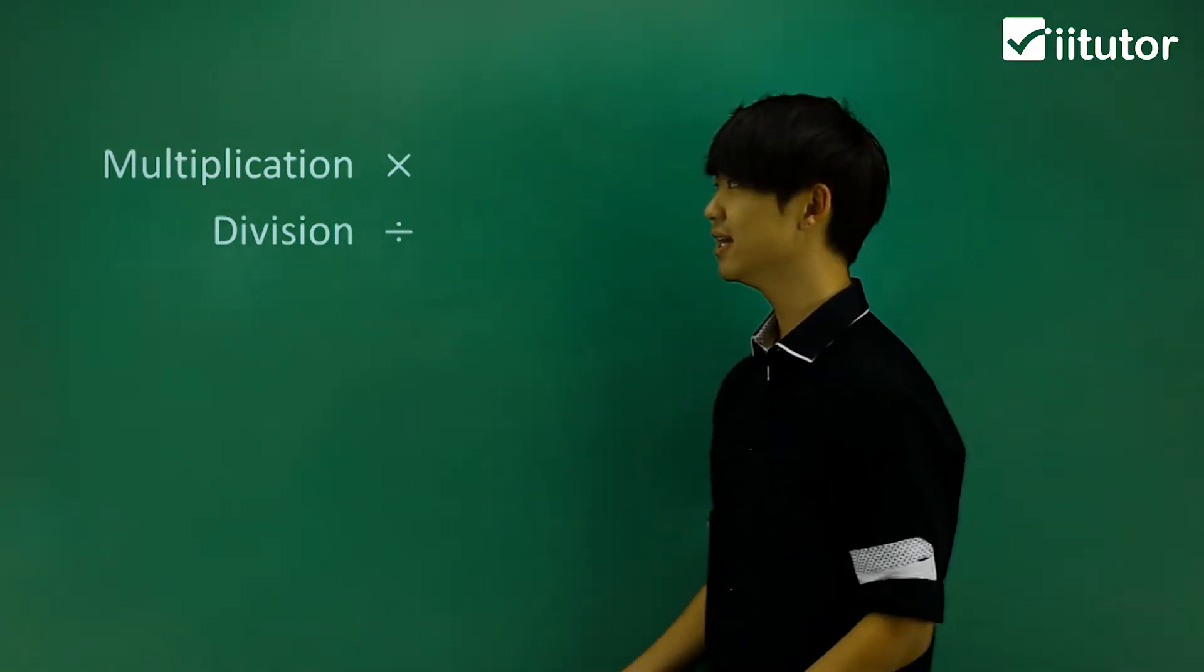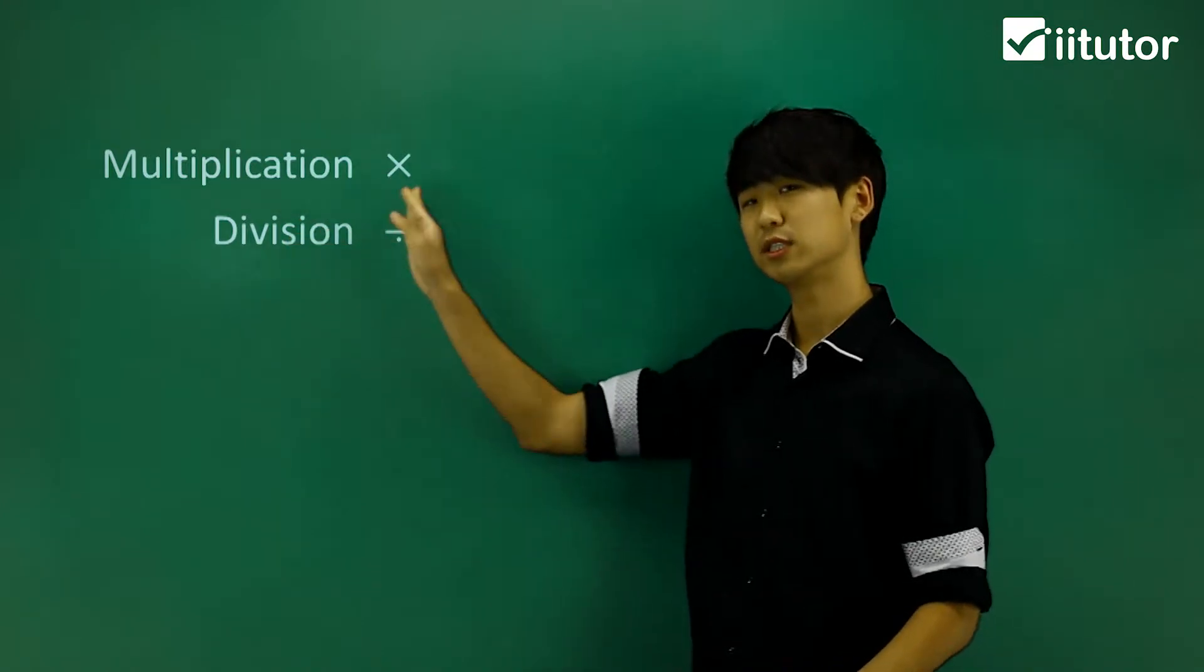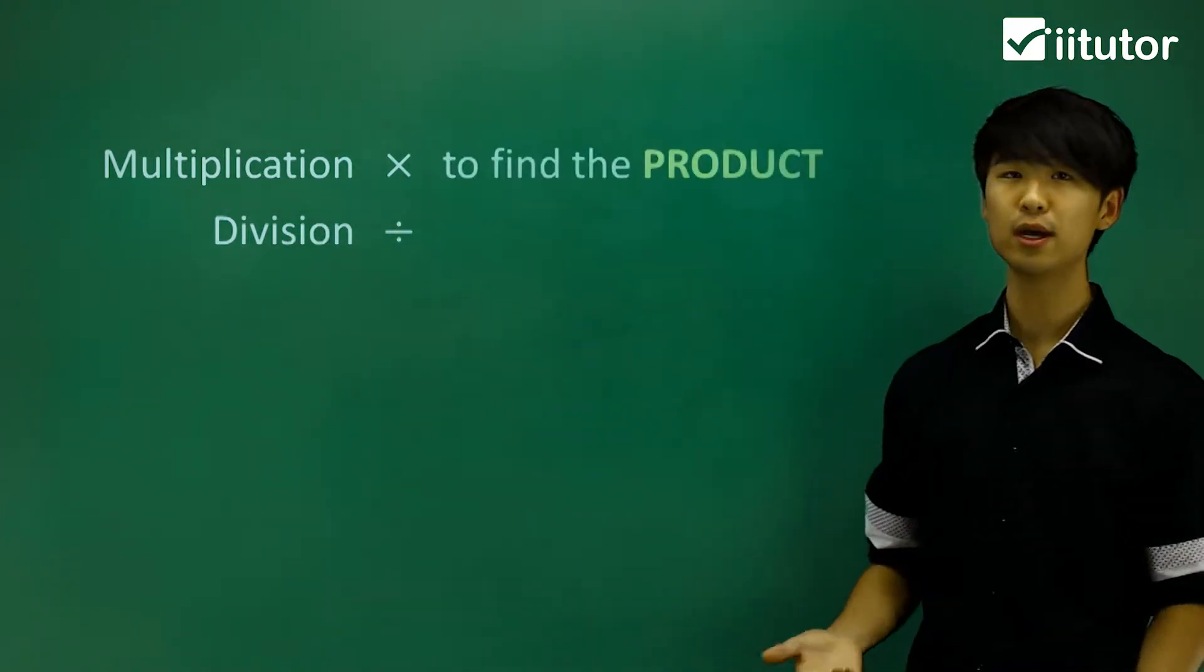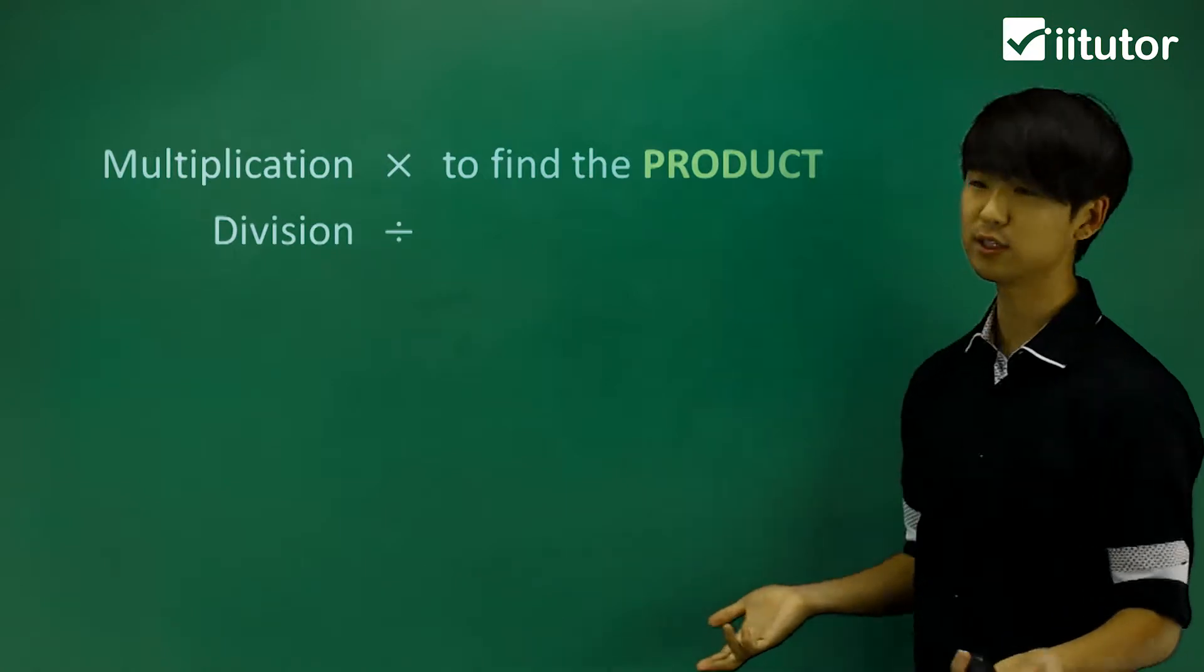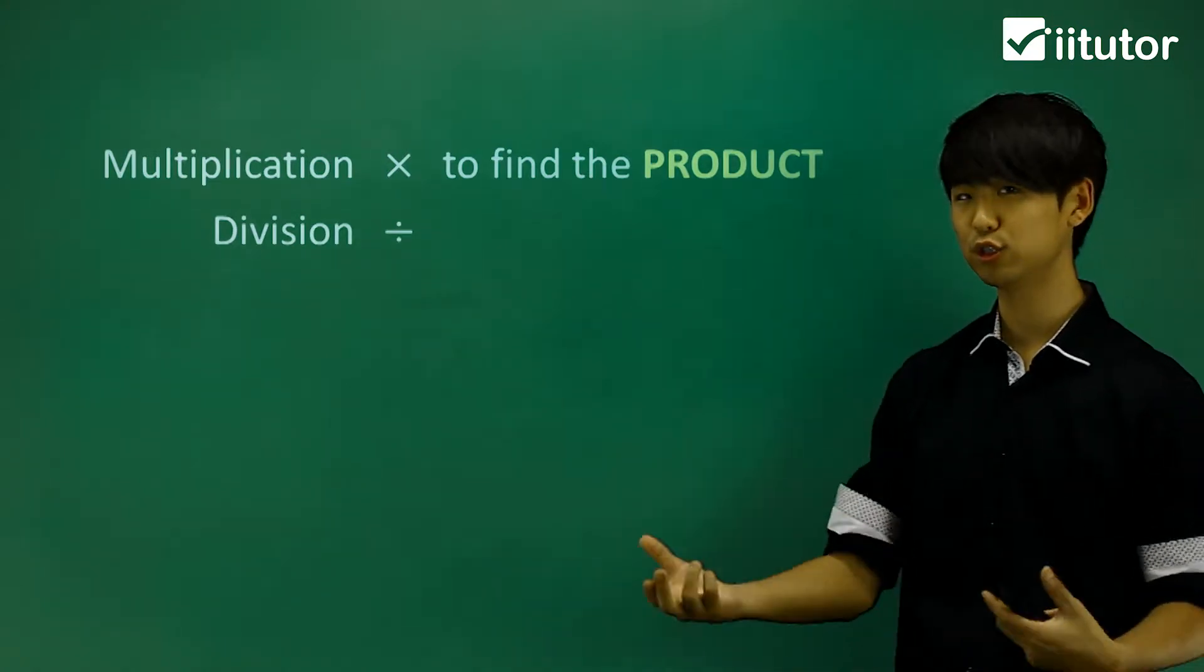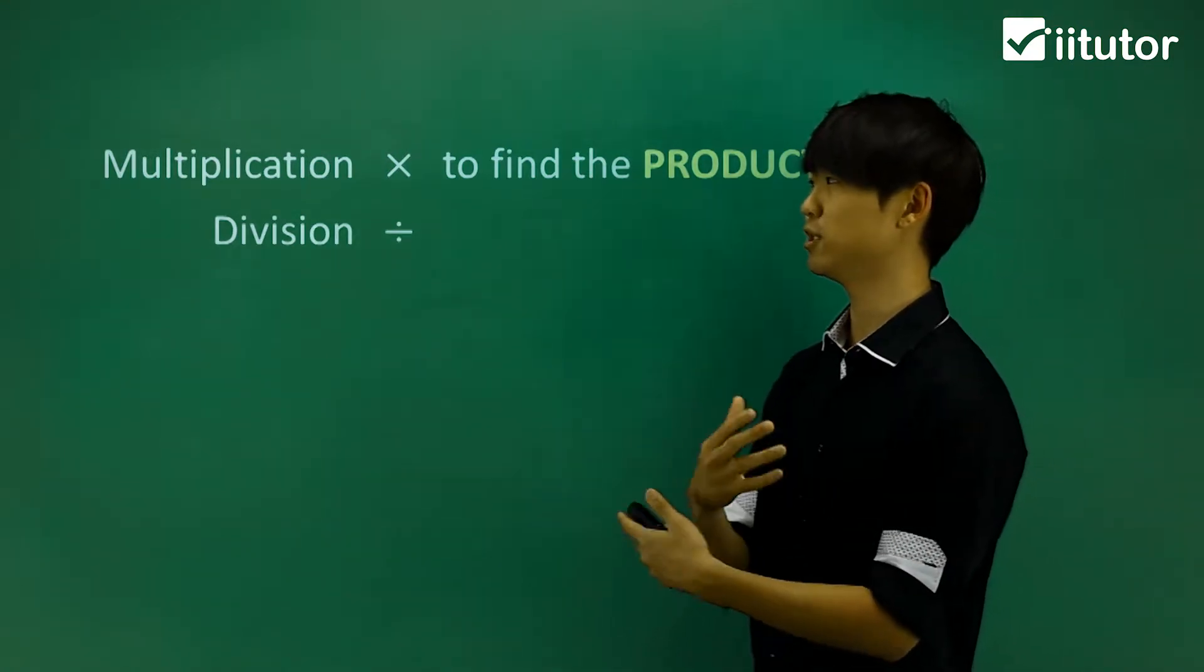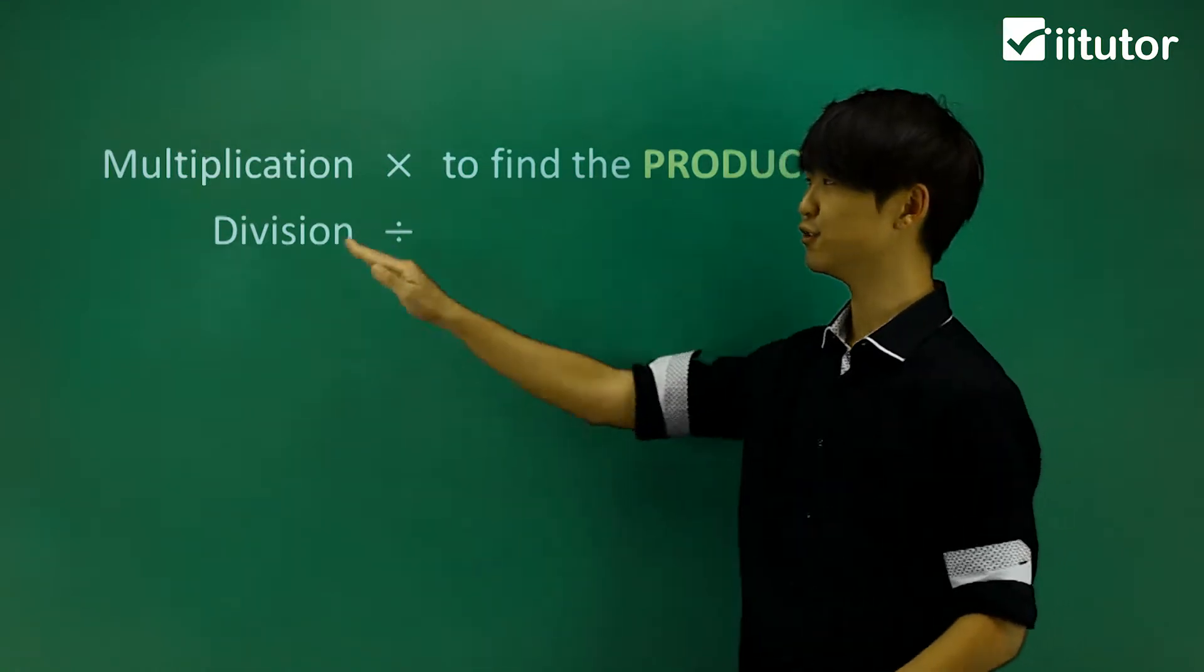For multiplication, we know it's a times sign. Now I can use the term to find the product. So if I want to say find the product between two numbers, I'm going to multiply those two numbers together or times them together.